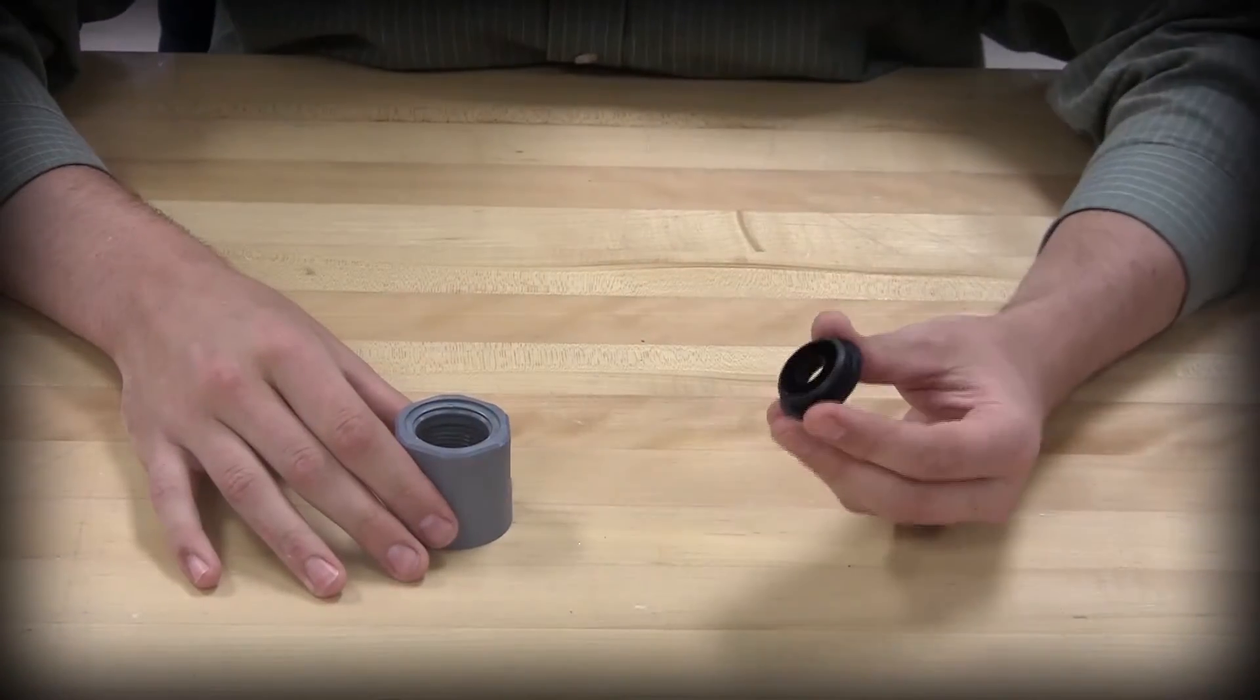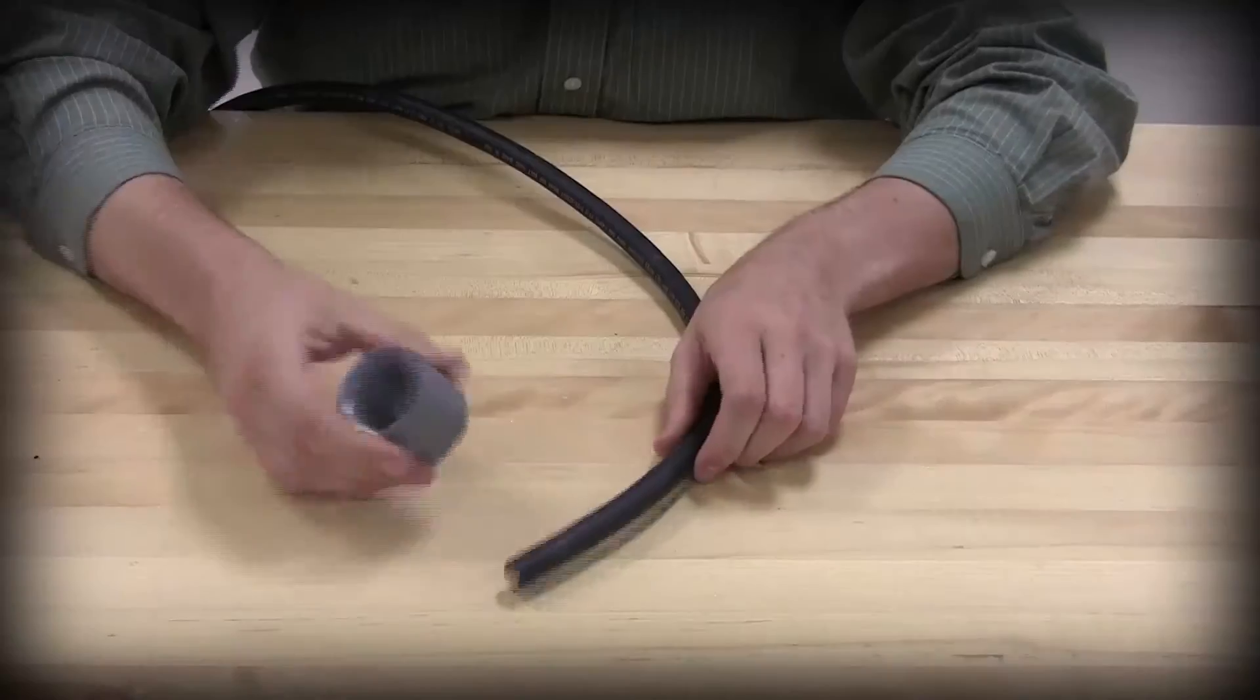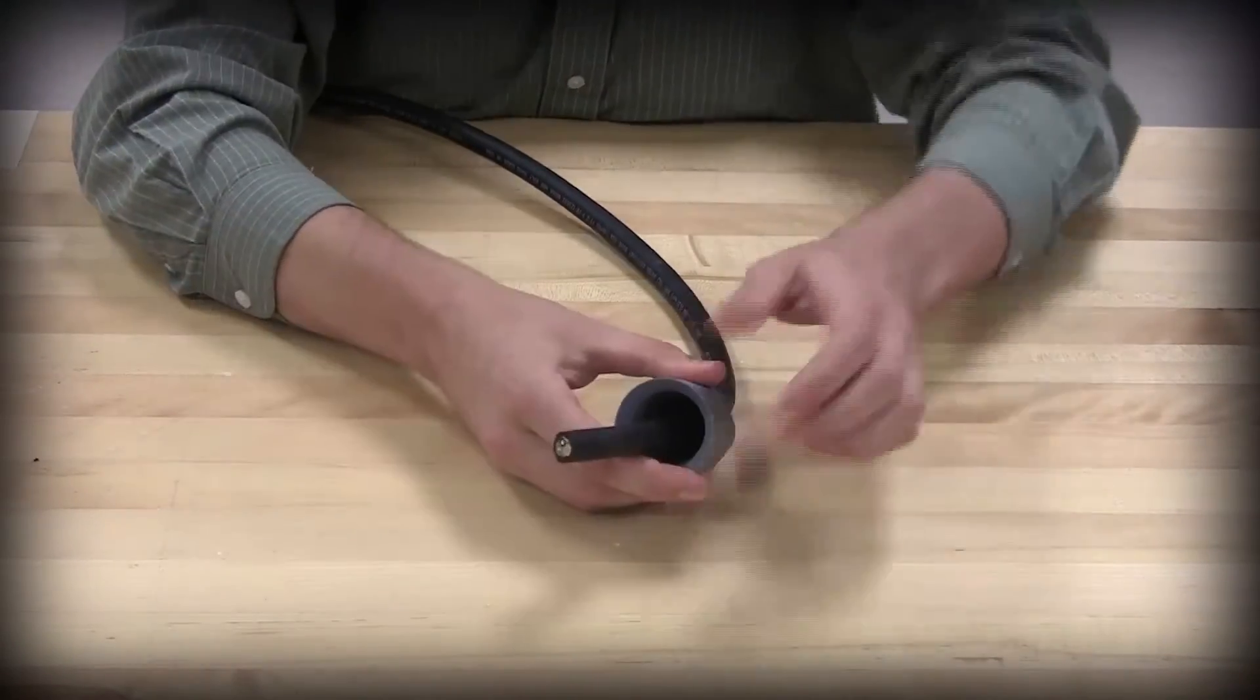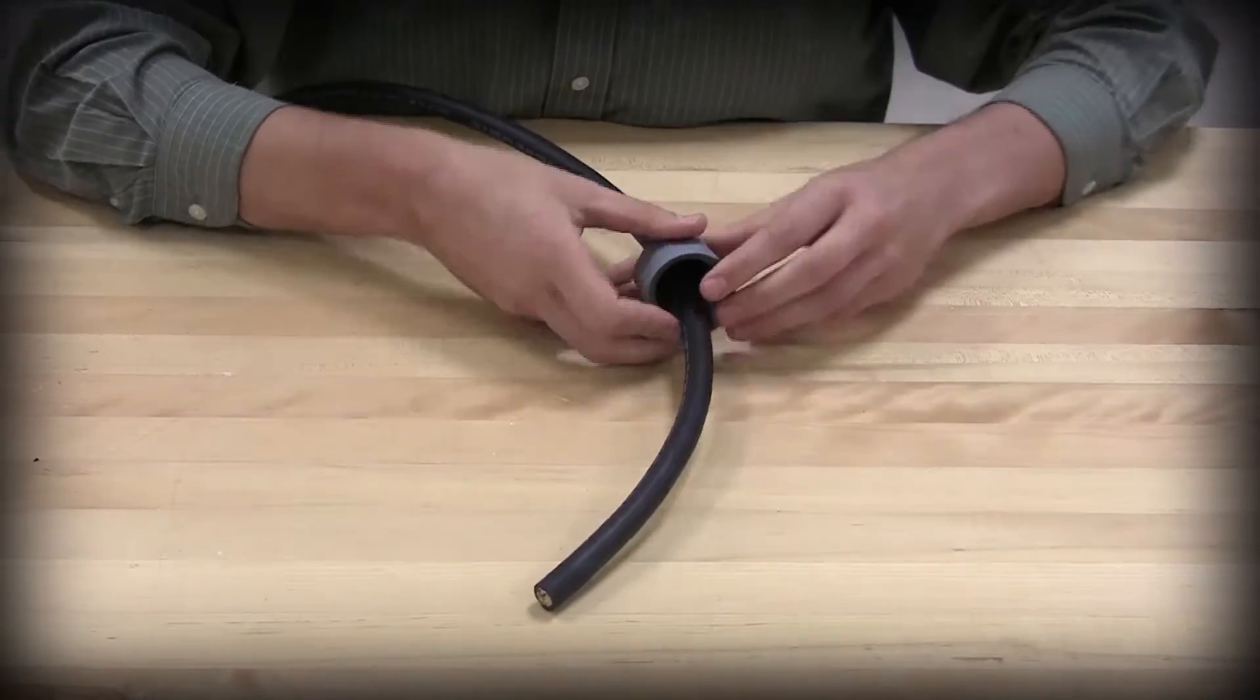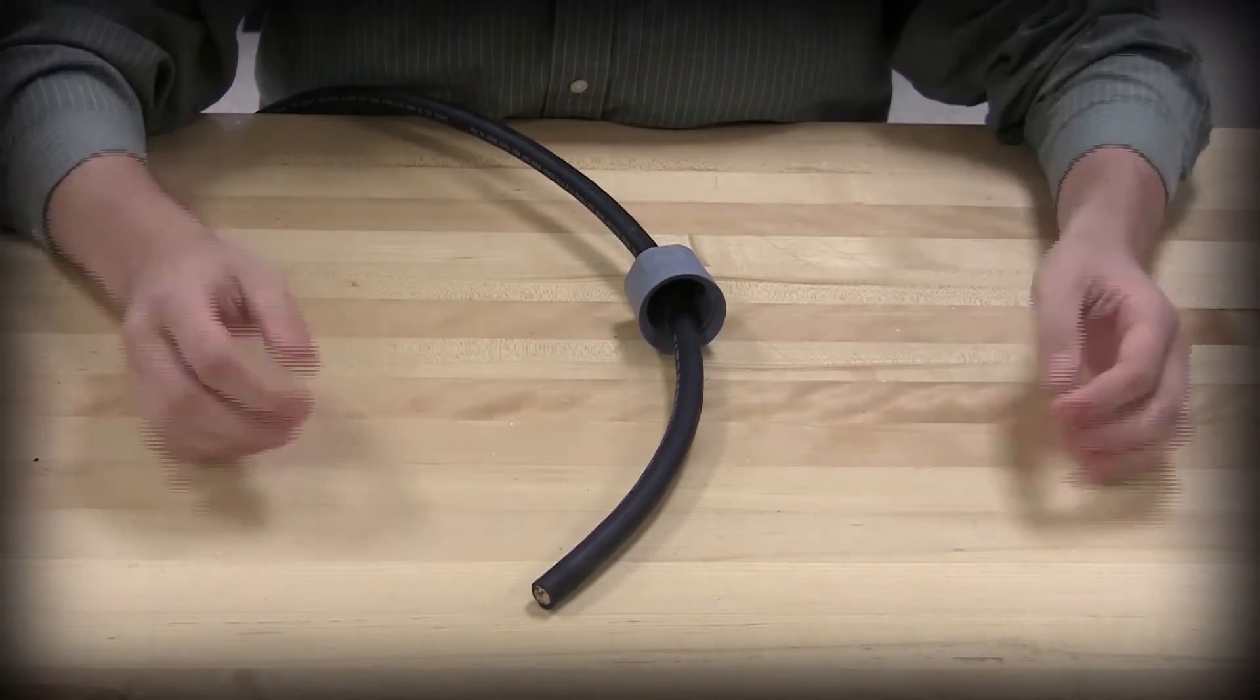Next, fully seat the cone seal onto the nut by inserting it into the back end of the nut. Feed approximately 12 inches of the cord through the attached cone seal and out the threaded end of the nut. Ensure that the cone seal is fully seated in the nut.